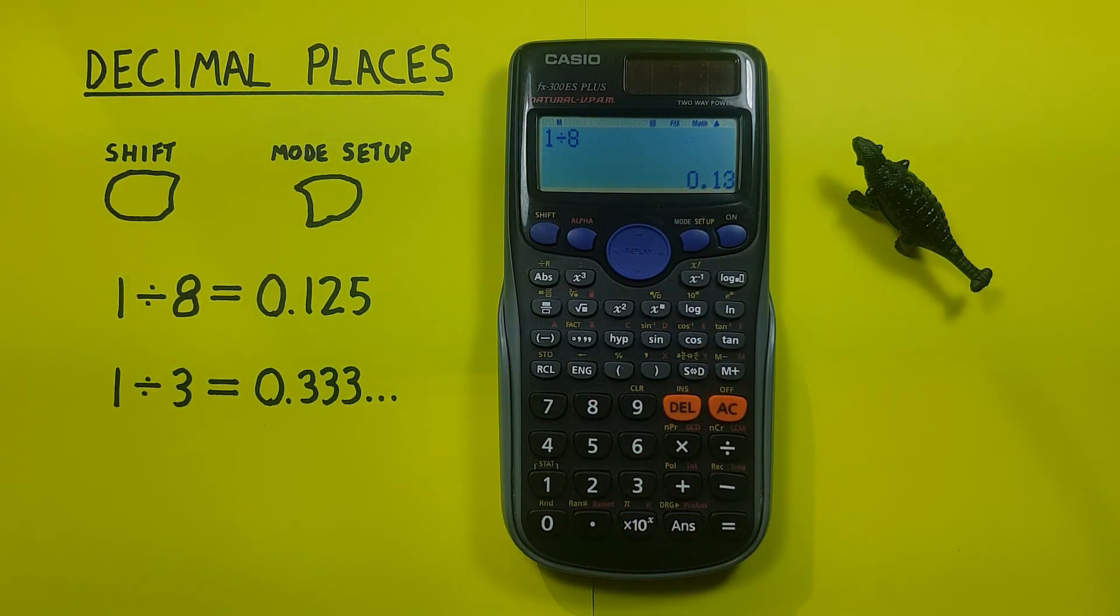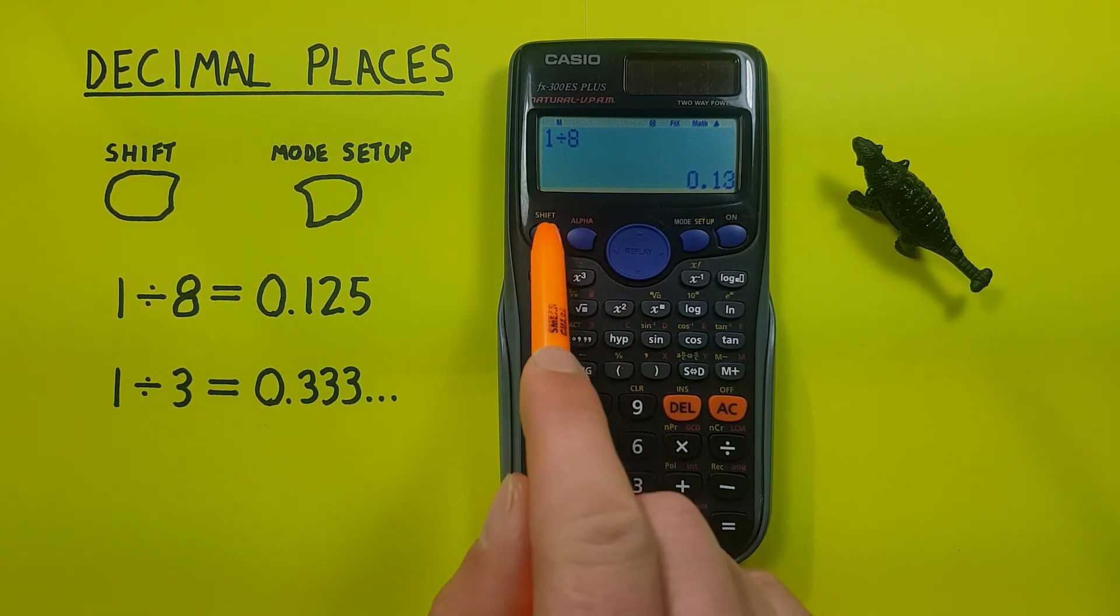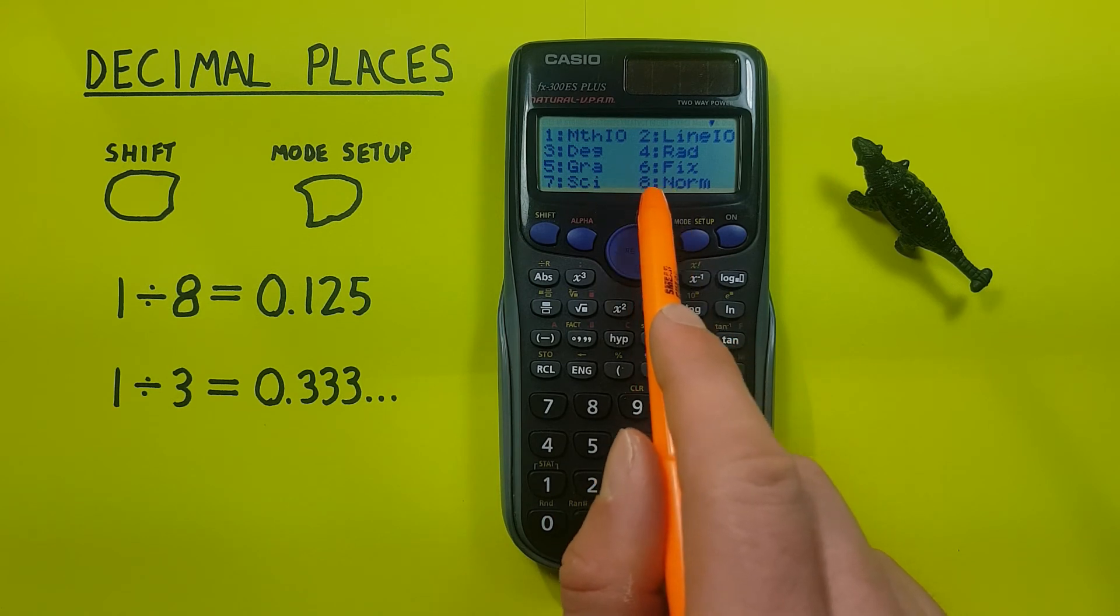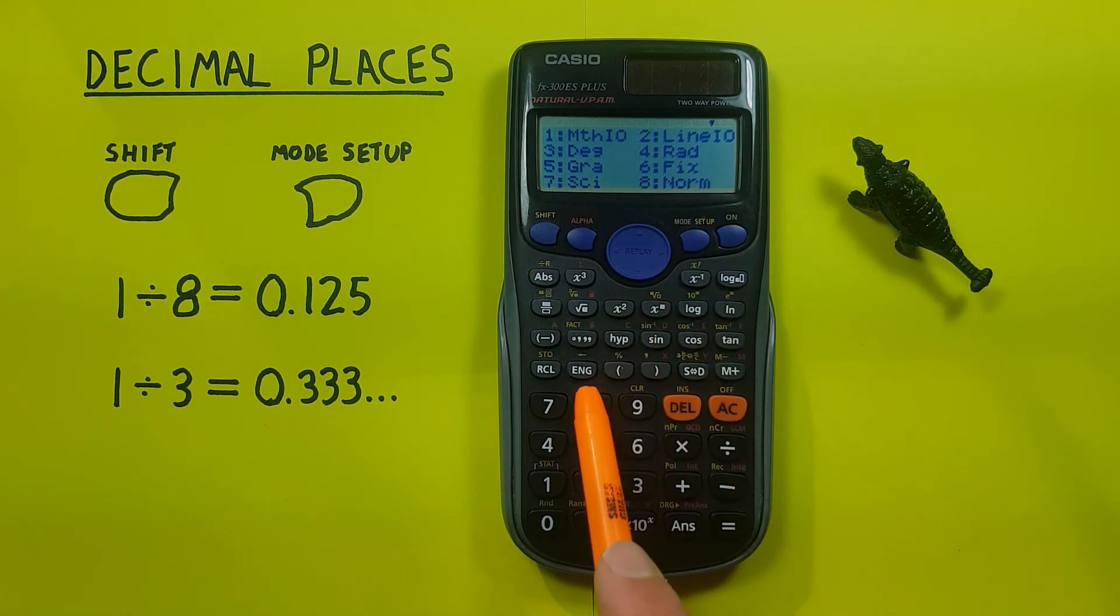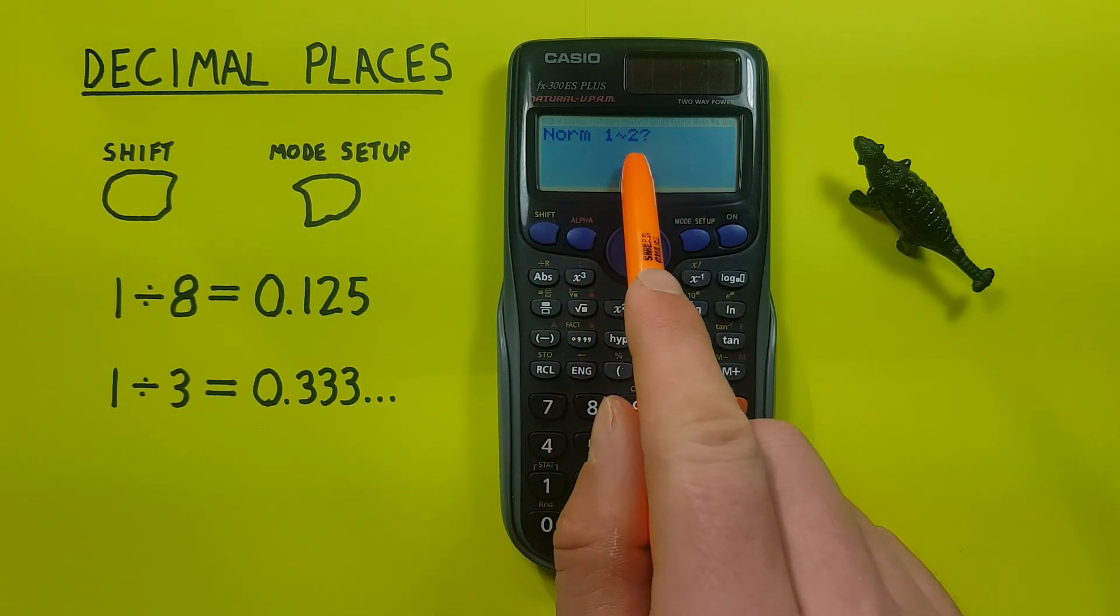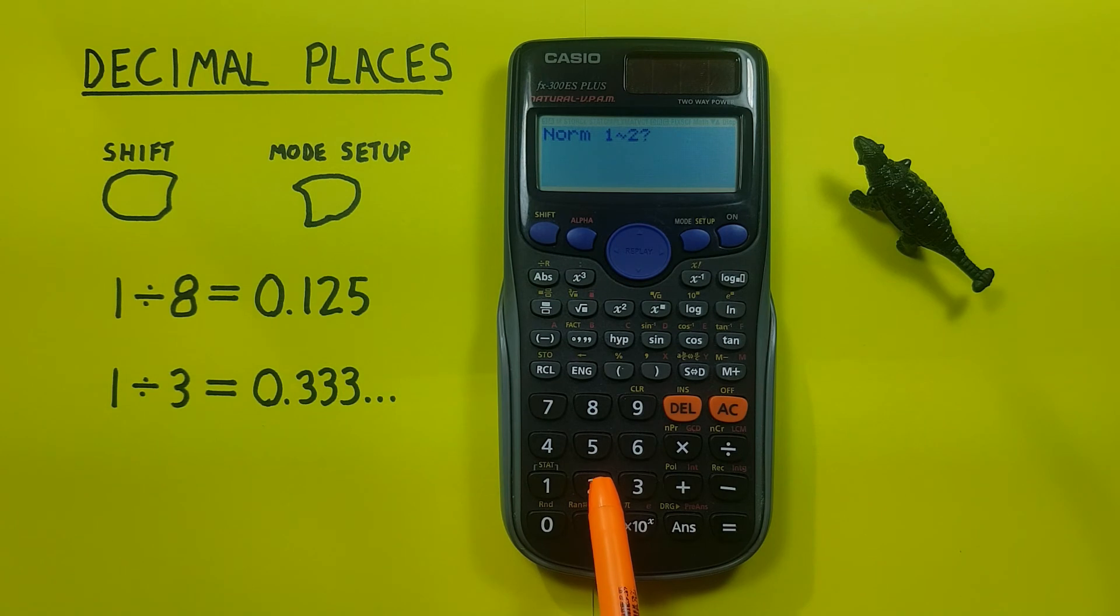Once we're done with this and want to go back to our normal mode or float mode, we can do this by pressing the shift mode key again and this time selecting number 8 or normal mode, which will bring us up to this menu here. Normal 2 is usually the best one to do because that gives you all your decimals.